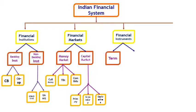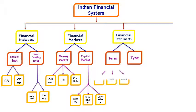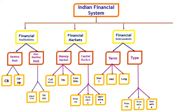The third component is financial instruments. Under financial instruments we have two sub-components: term-based financial instruments and type-based financial instruments. Under term-based, we have short-term, medium-term, and long-term financial instruments. Under type-based, we have three types: primary, secondary, and innovative or hybrid financial instruments.